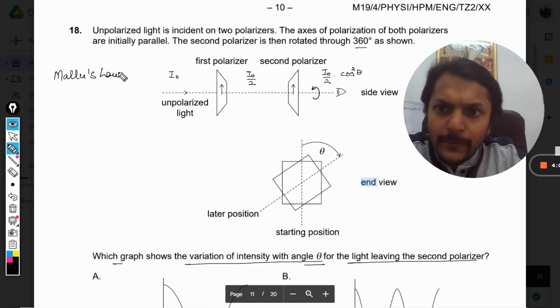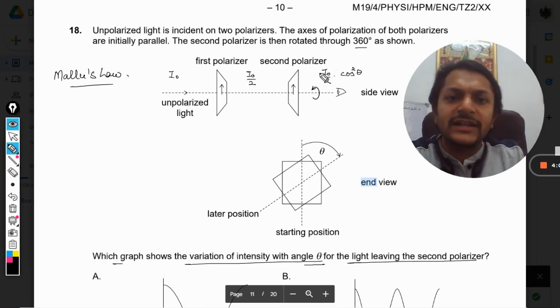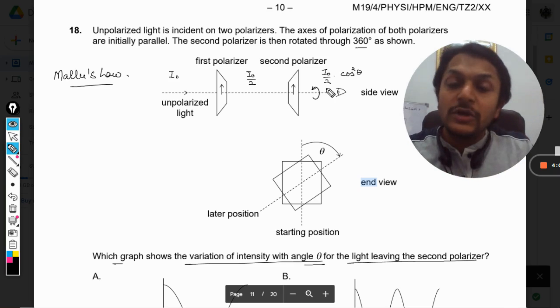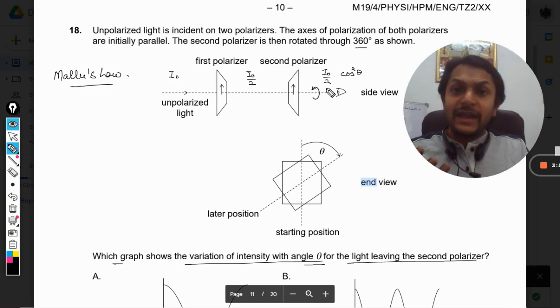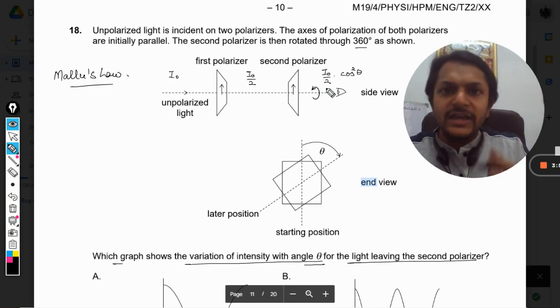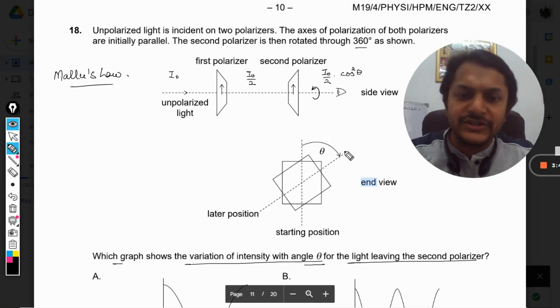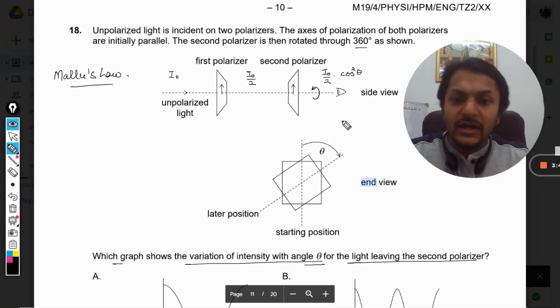According to this law, the intensity that is coming out of the second polaroid, which you sometimes call analyzer, is directly proportional to the square of the cosine of the angle between the axes of two polarizers. So it is cos square theta.